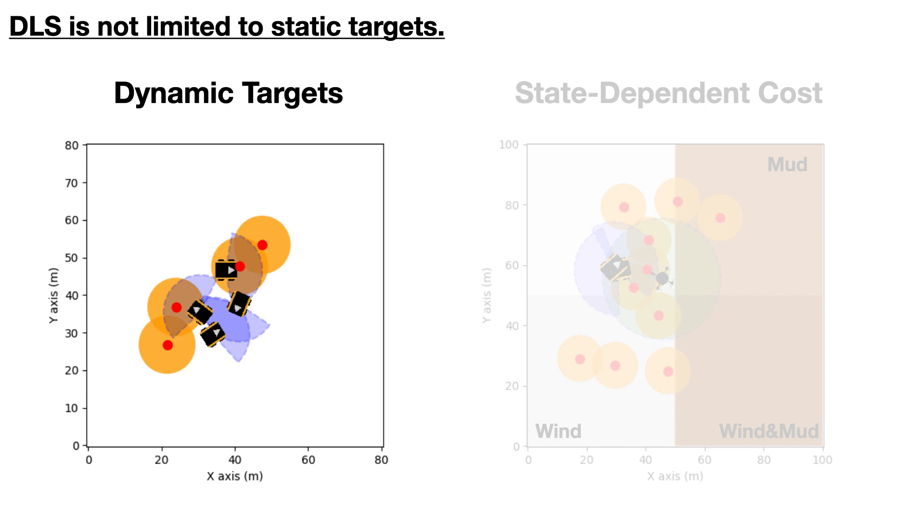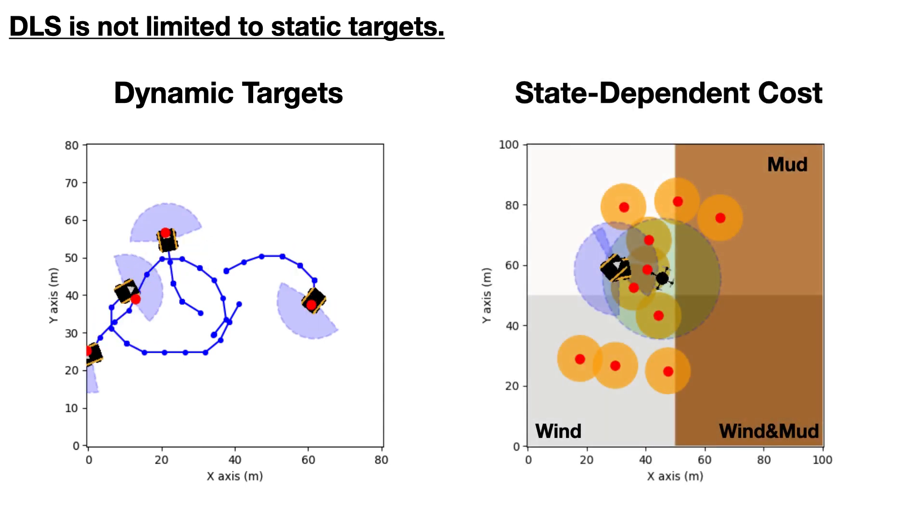Our proposed method is not limited to static targets. For example, it applies to dynamic target tracking. It also works when robots experience state-dependent costs due to factors such as wind and mud.